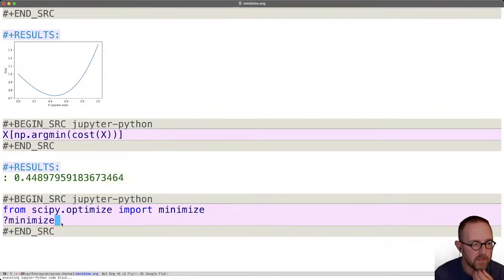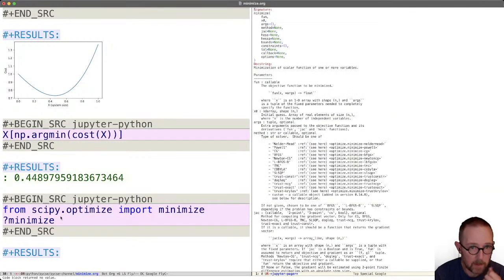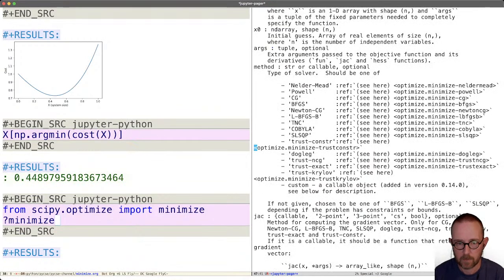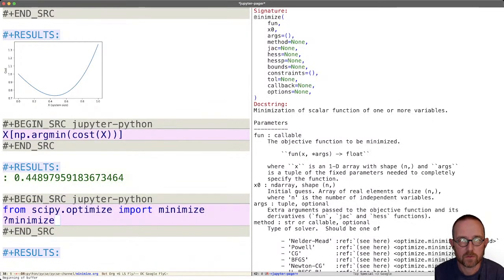So minimize is a general function that you can use to find the minimum of a function. So it starts out here similar to fsolve, it takes a function as an argument and an initial guess. And that initial guess is why it was important for us to be able to visualize this.